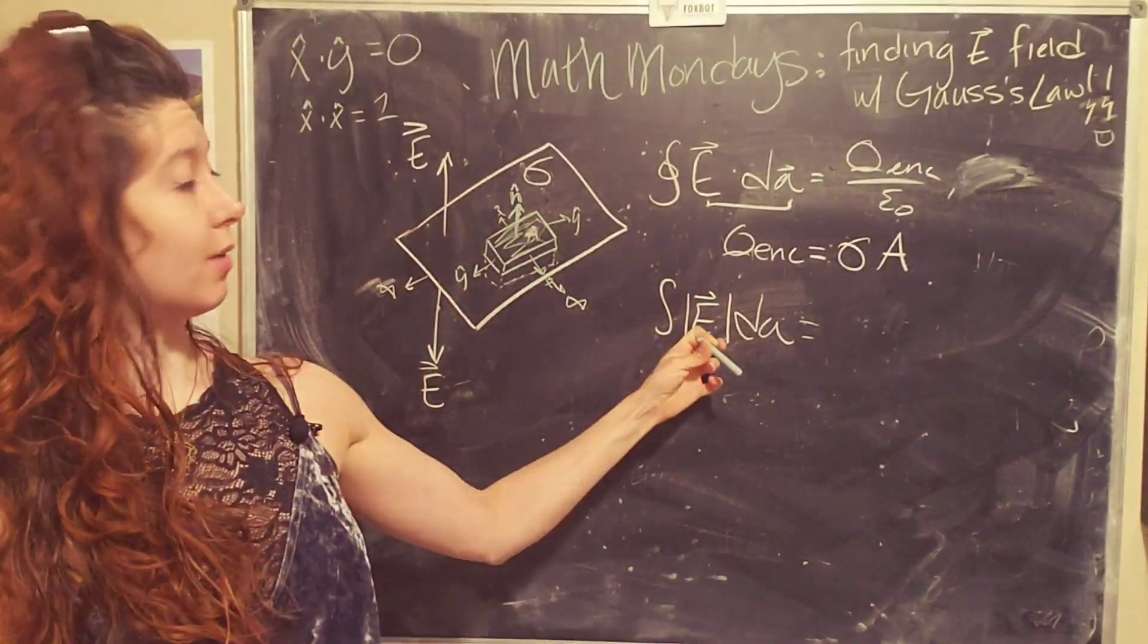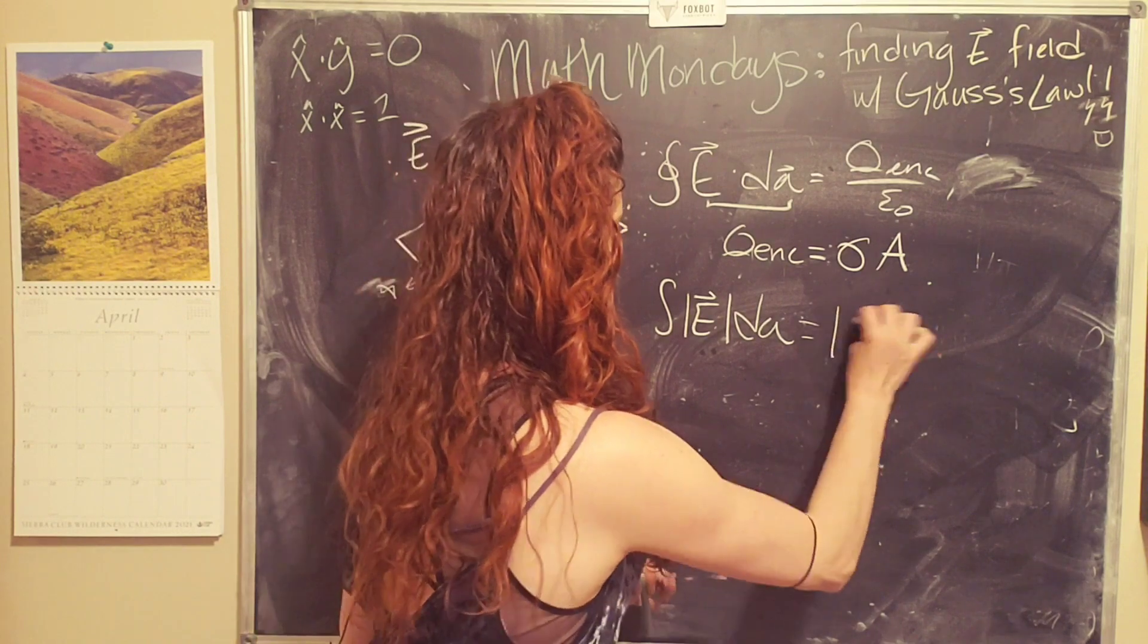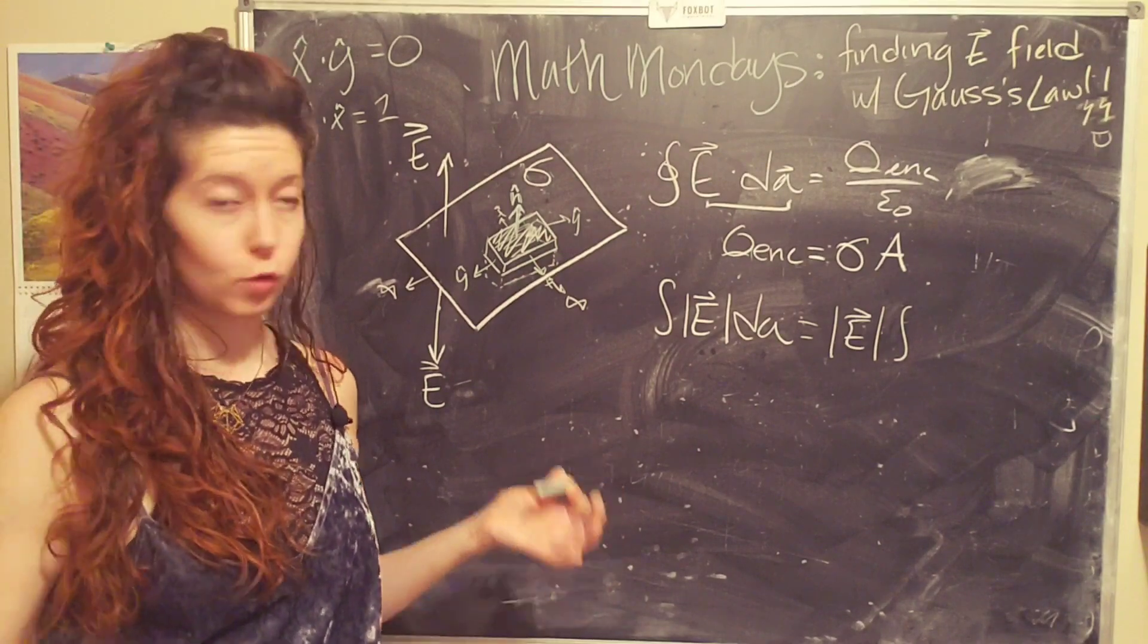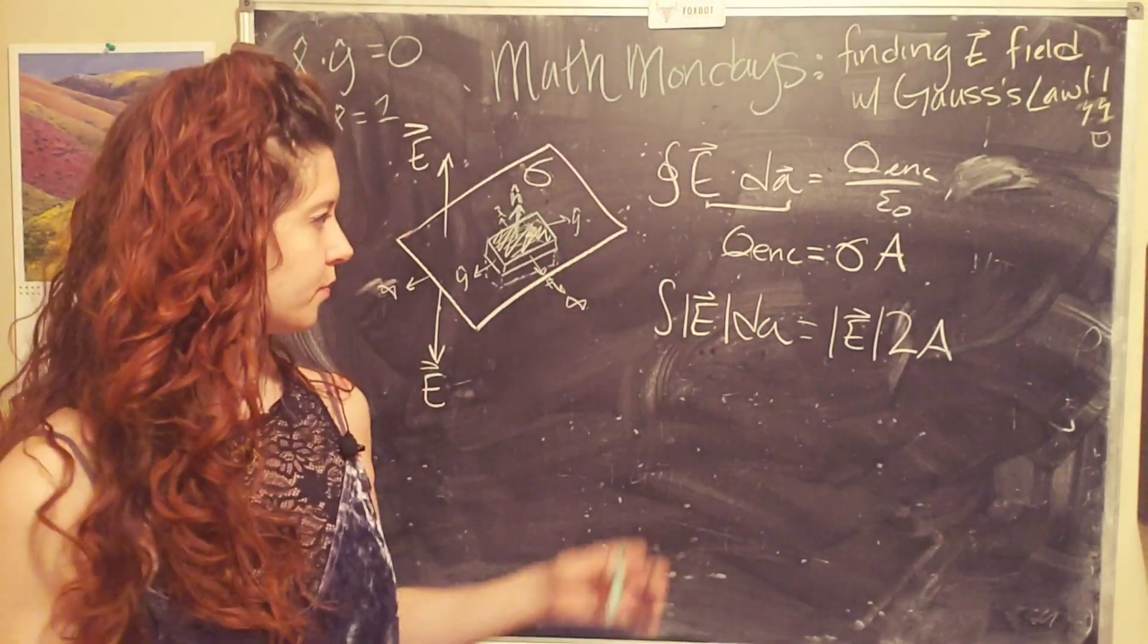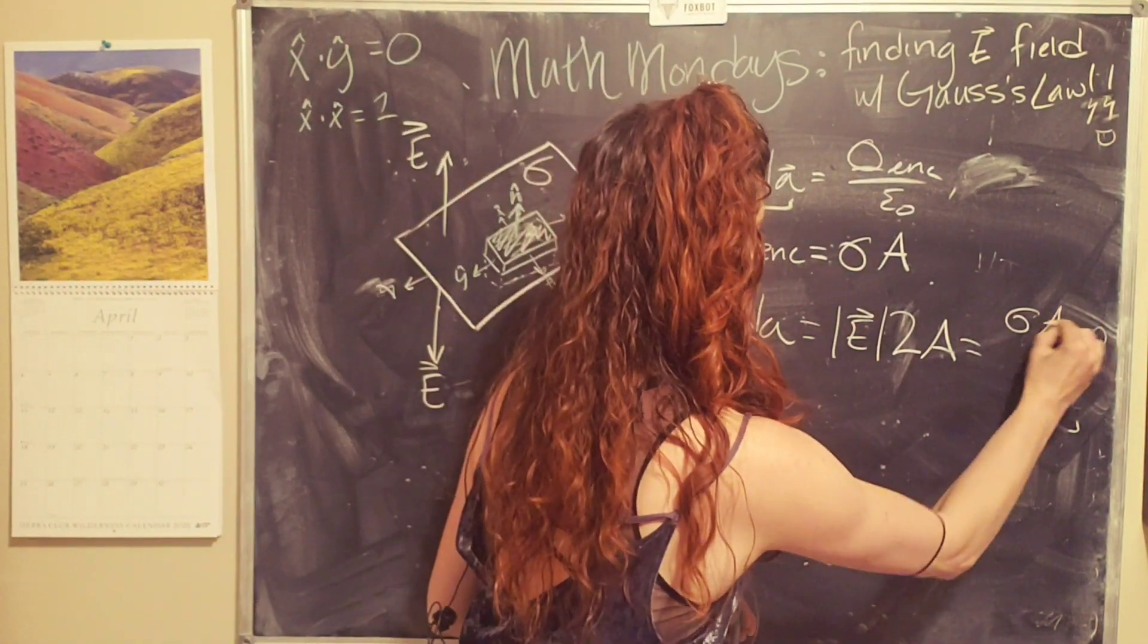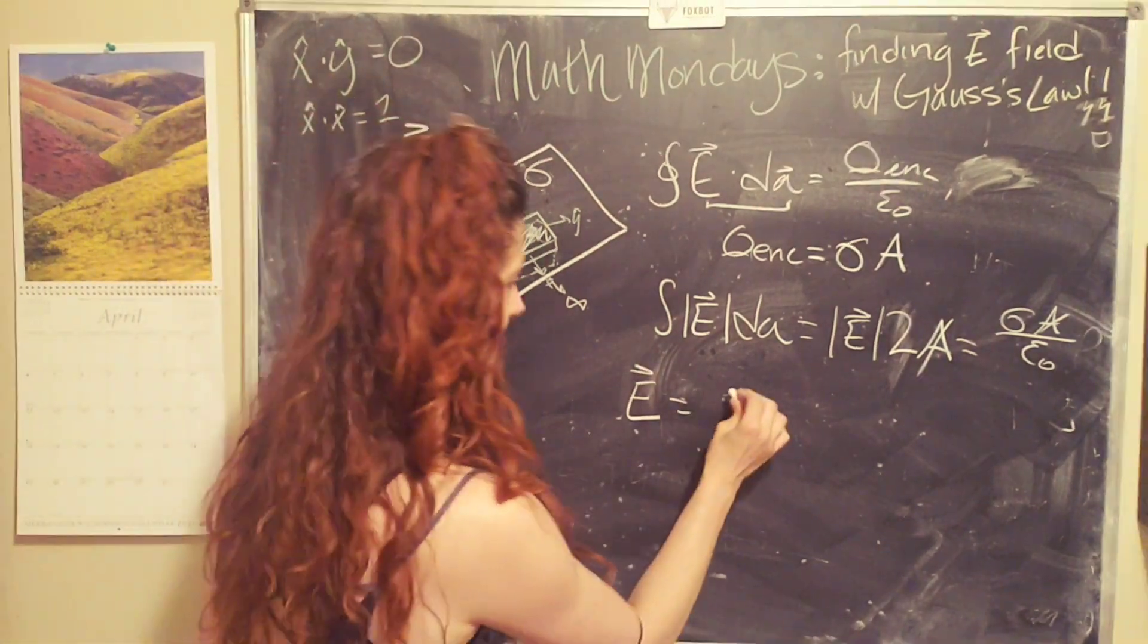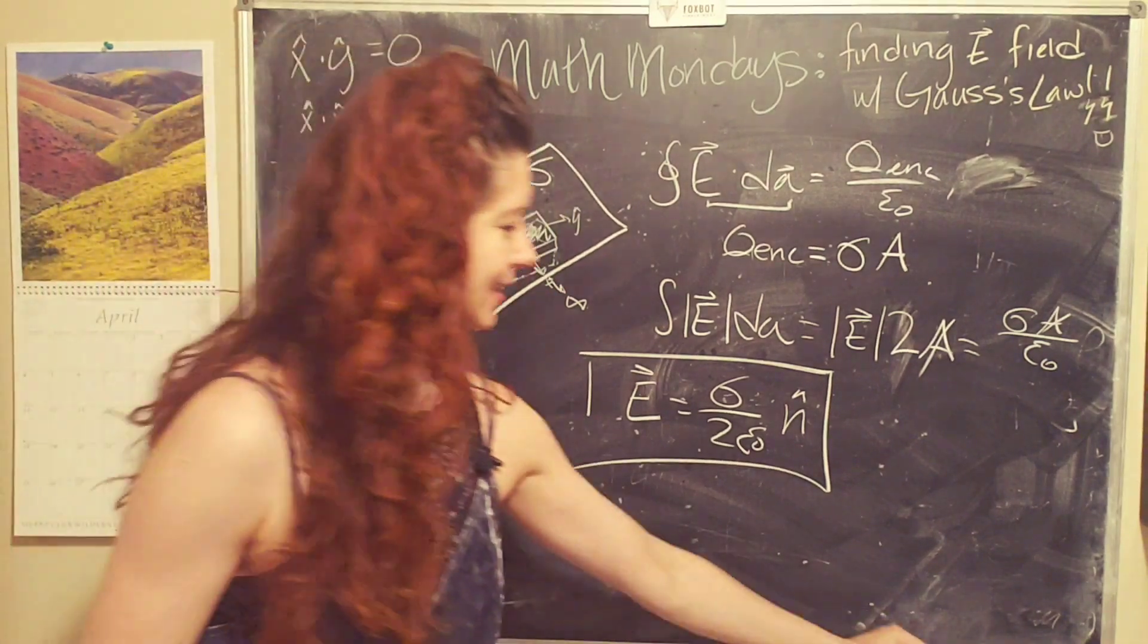Okay. So that means that we have the magnitude of the electric field times the magnitude of dA. Again, the electric field is going to be constant. And so we can pull that out of the integral and we are integrating over this area here. And so if we integrate over that total area on the top and the bottom, we're going to get just two times the area. And then we can set that equal to Q enclosed over epsilon naught. So we end up with sigma times A over epsilon naught. Hey, wait a second. The area cancels and we end up with the electric field as sigma over two epsilon naught in the N hat direction. Woo. That wasn't too bad.